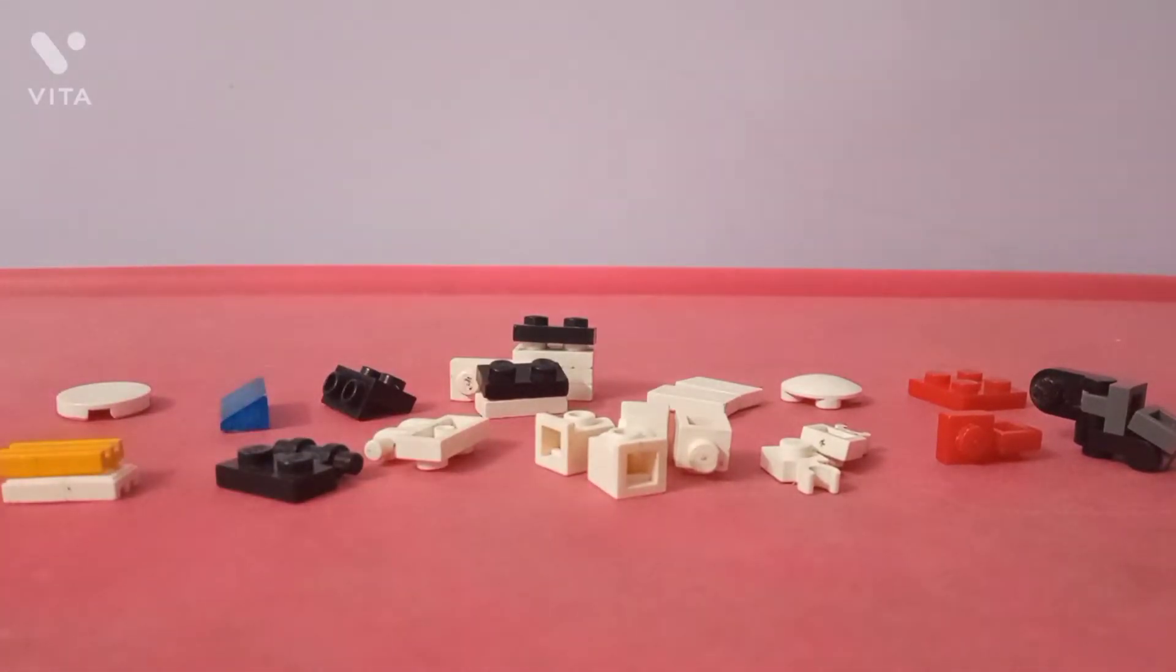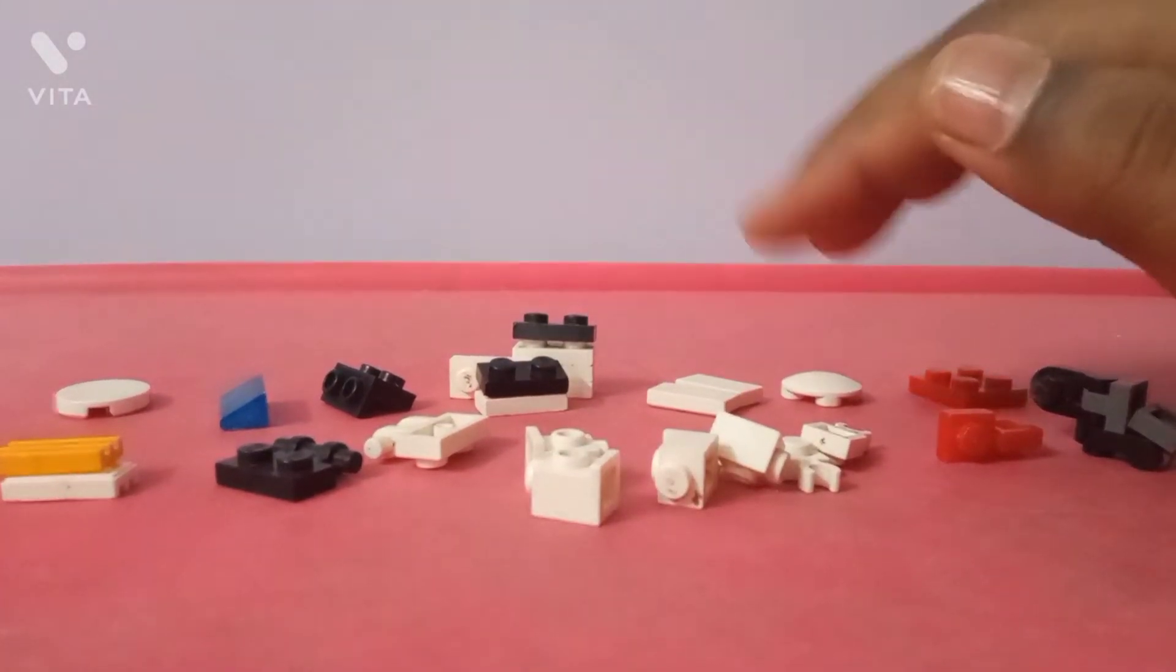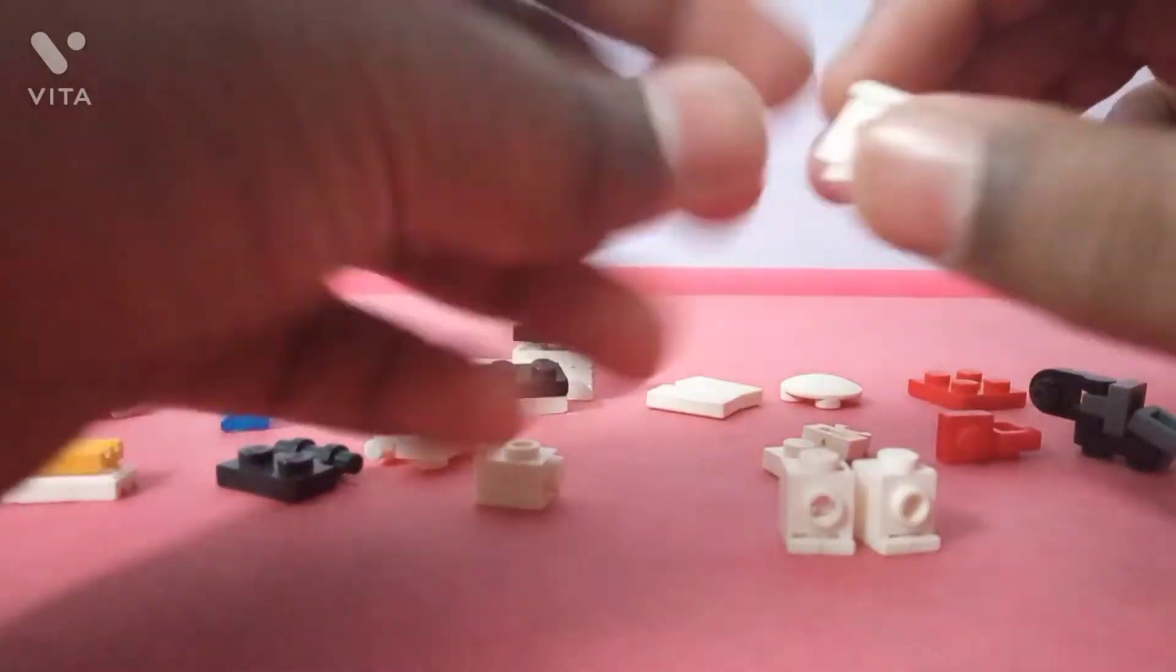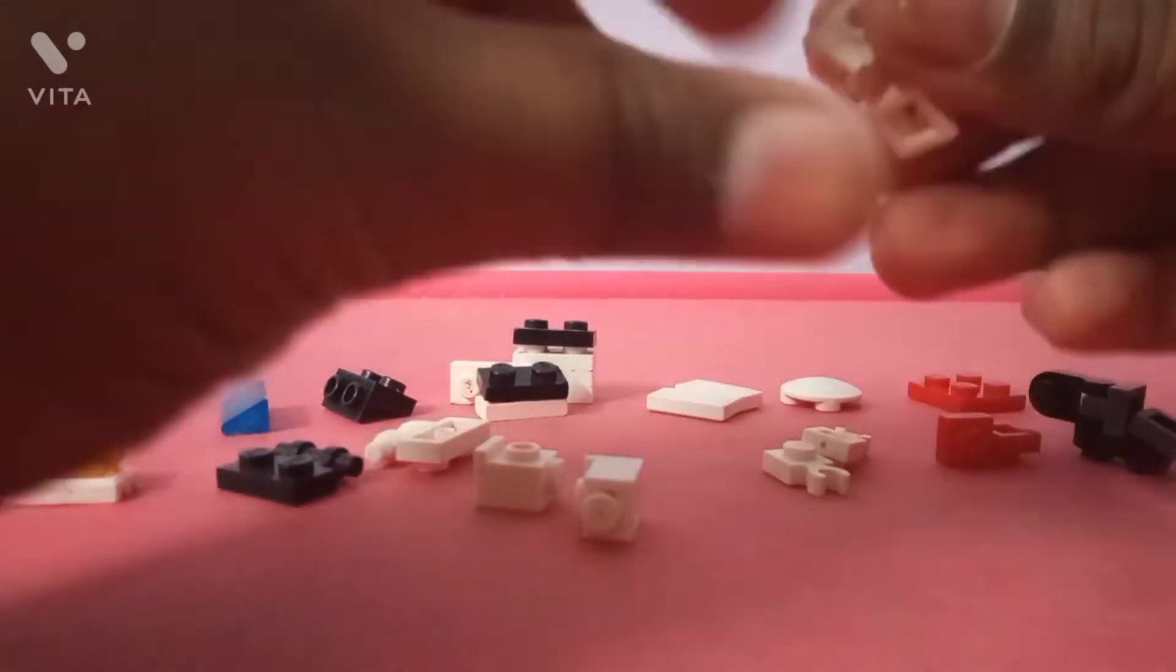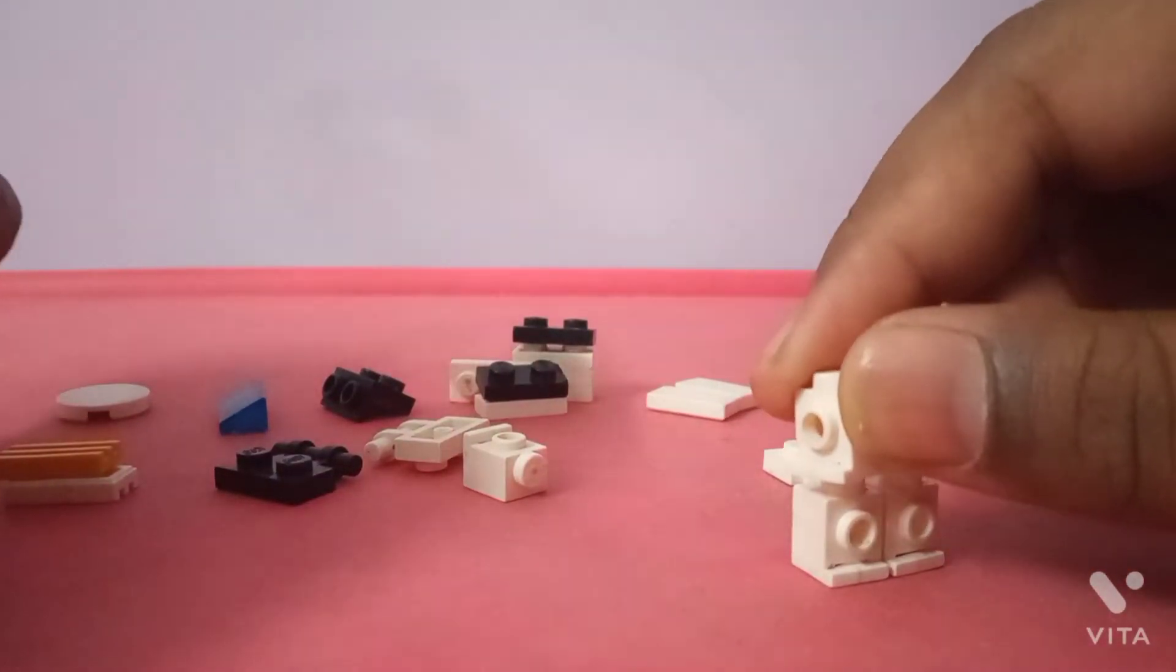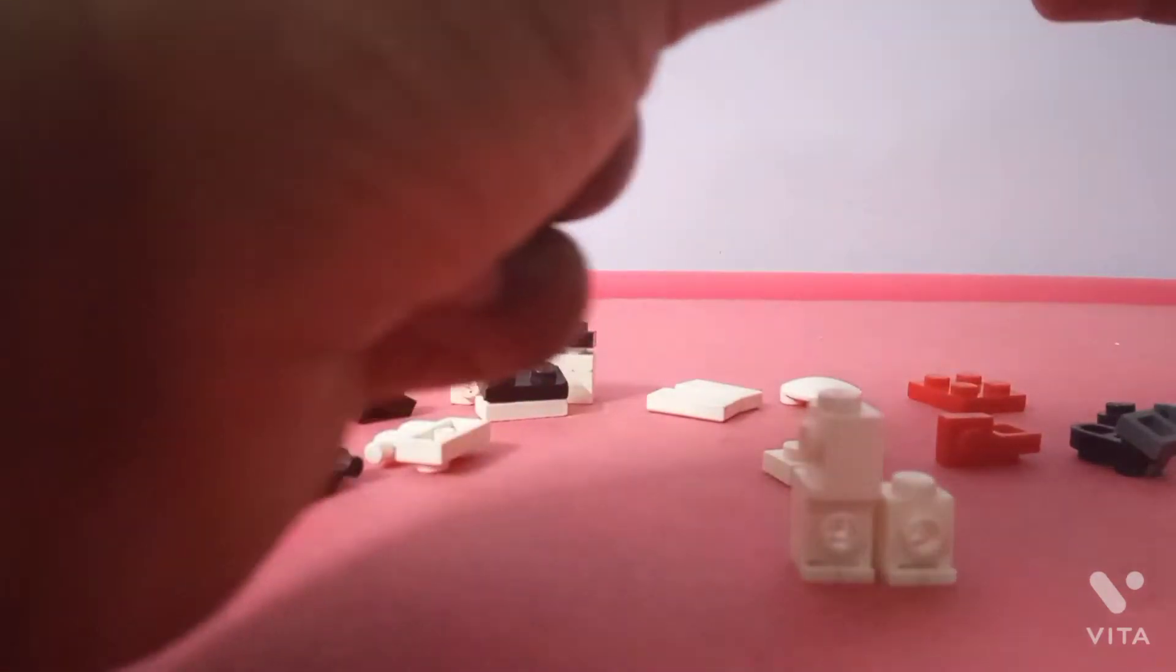Let's get building. To start, you're gonna take two of your four headlight bricks. Then take another one of your four headlight bricks and place them like that. Just like that. And then repeat it for the other headlight brick, just like that.